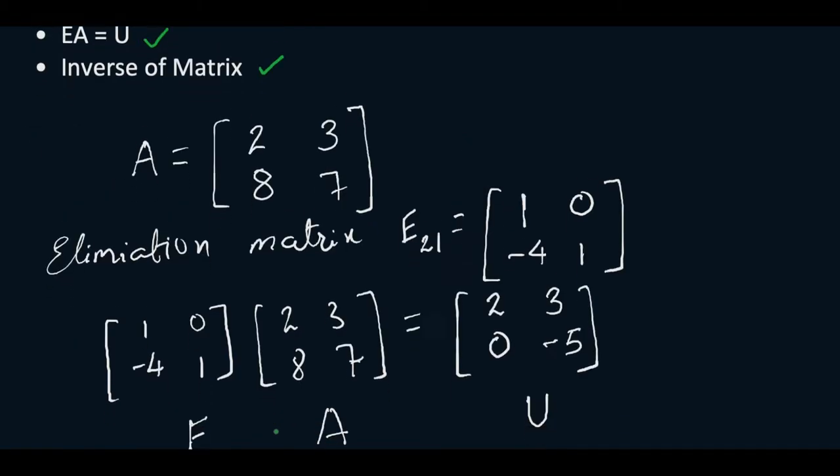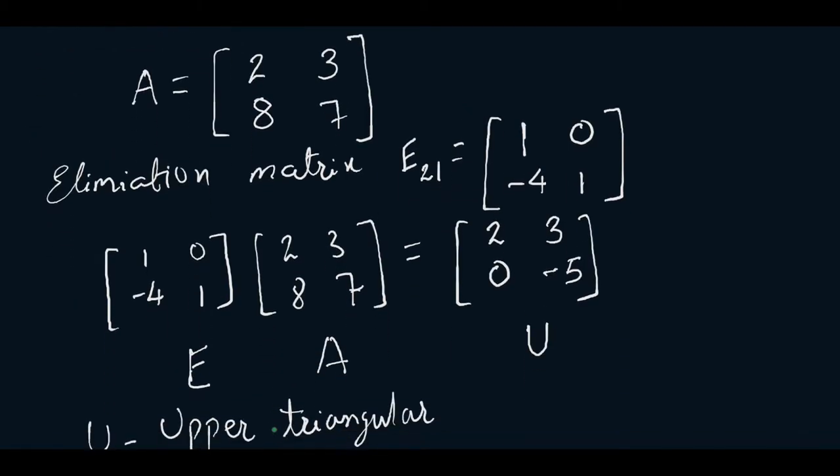Now let us take an example. We will take A equals [2,3;8,7], the same example used for factorization of A into LU. Here we will be making this 8 as 0, so our elimination matrix will be [1,0;-4,1]. The operation here is A2 equals A2 minus 4 times A1.